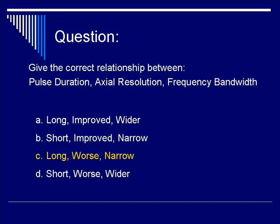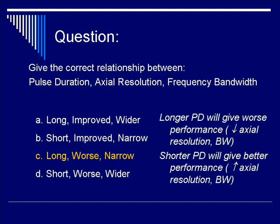The correct answer is C, long, worse, and narrow. Longer pulse duration leads to worse axial resolution and narrow frequency bandwidth. Longer PD gives worse resolution, decreased axial resolution and bandwidth. Shorter PD will give better performance, that is, increased axial resolution and higher bandwidth.